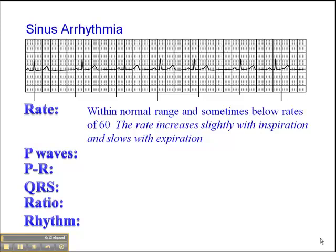The heart rate can be within normal range, sometimes a little slower than 60, so it may be slightly bradycardic. The rate increases slightly with inspiration and slows with expiration. This is sometimes referred to as a Bainsbury reflex, where there's a slight decrease in vagal tone with inspiration and then a restoration of vagal tone with expiration.